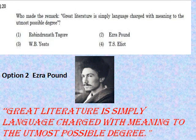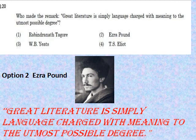The next question asks who made the remark: 'Great literature is simply language charged with meaning to the utmost possible degree.' The options are Rabindranath Tagore, Ezra Pound, W.B. Yeats, or T.S. Eliot. Option 2, Ezra Pound, is the correct answer. Ezra Pound was an expatriate American poet and critic, and a major figure in the early modernist poetry movement.